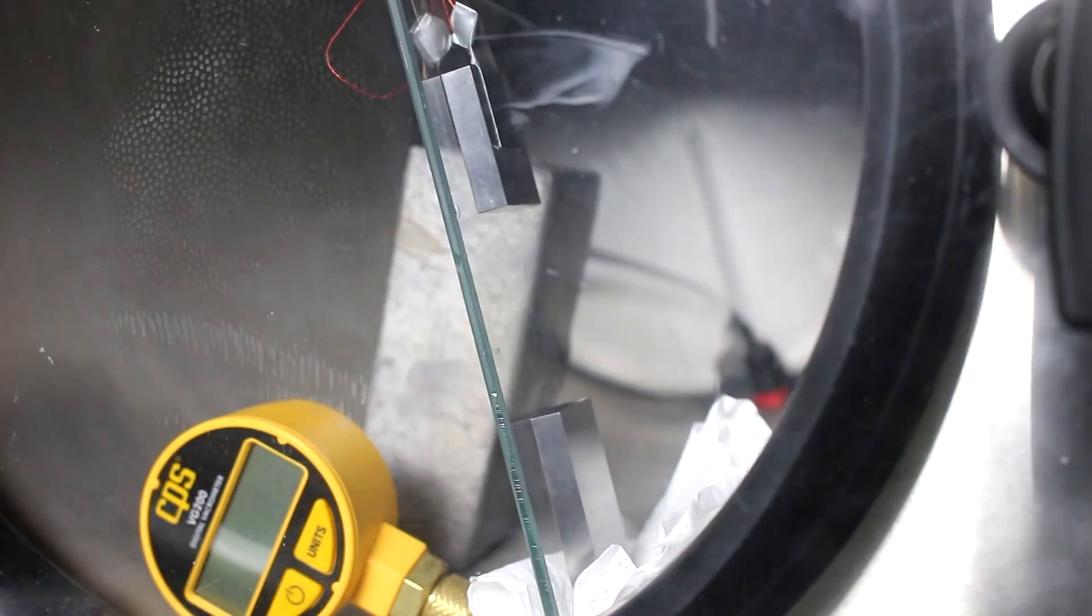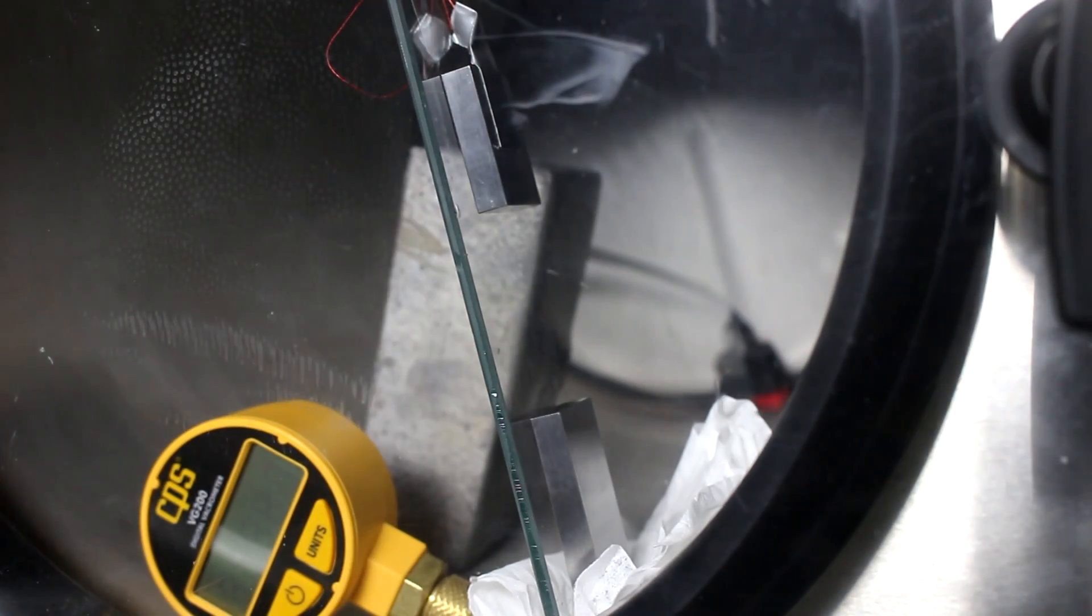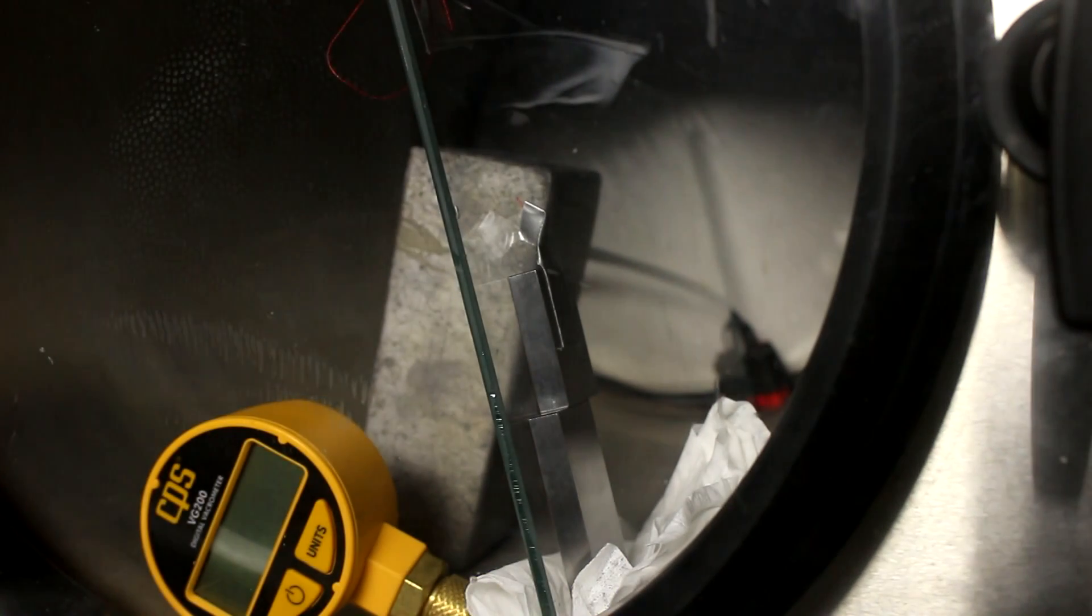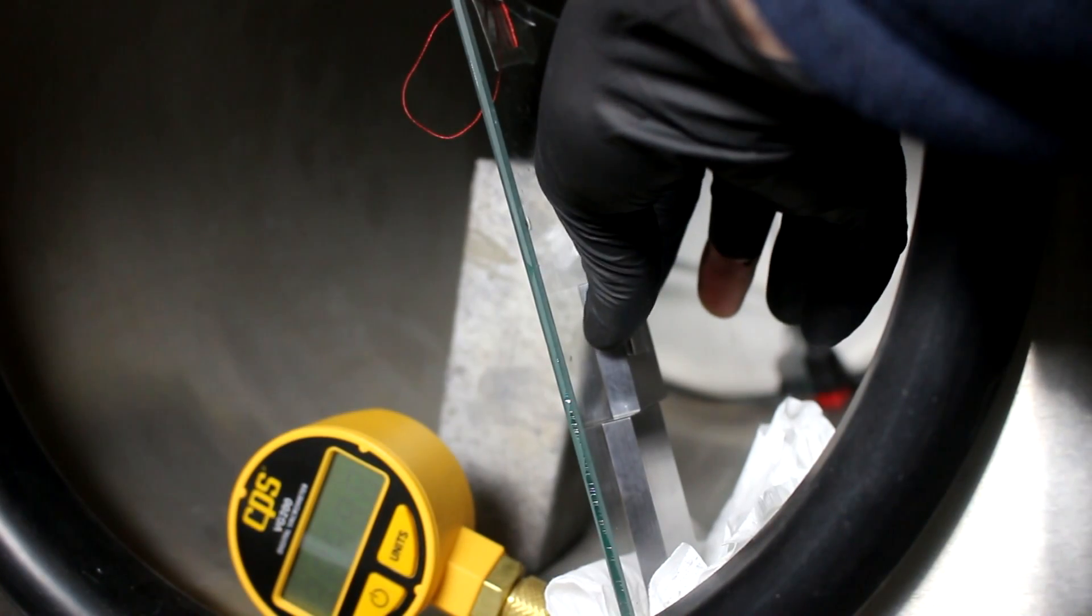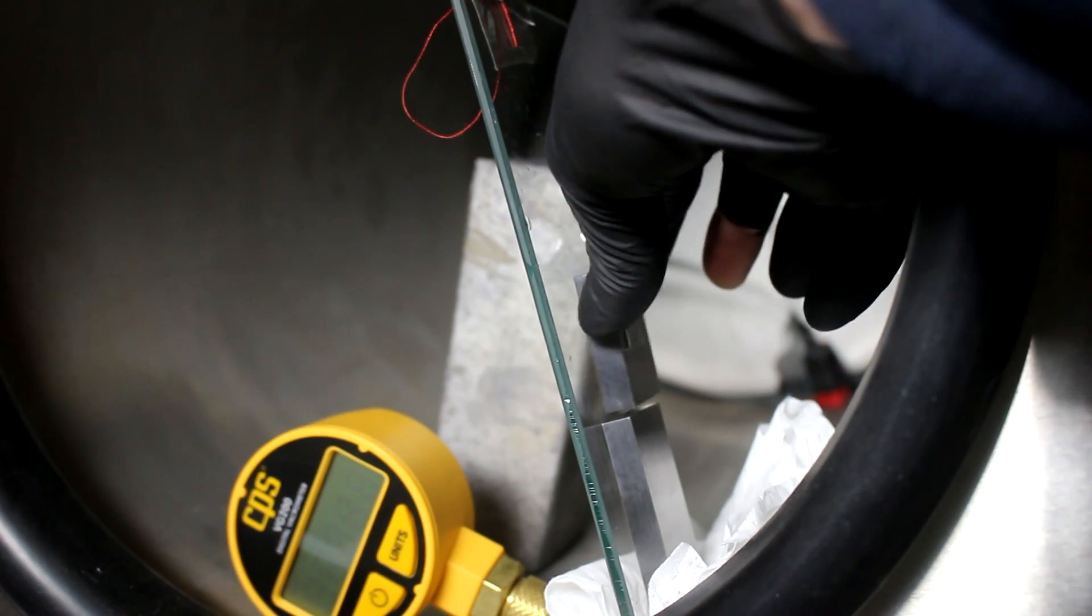I've been vacuuming until long after the gauge is shut off. So, let's cut the string, and let's drop it this long distance. Hmm. Kind of bounced. But, it's still on it. Let's let the pressure back in, and see if it's stuck. Nope. It didn't stick.